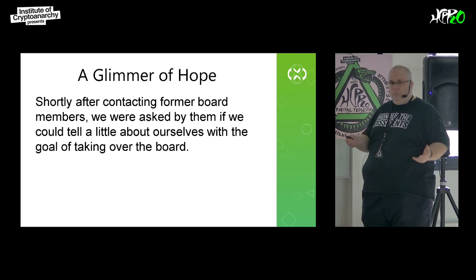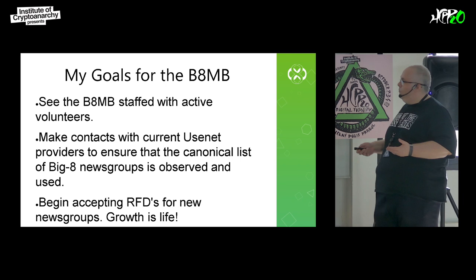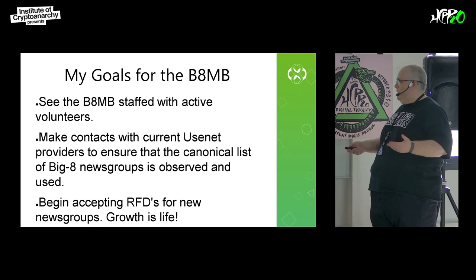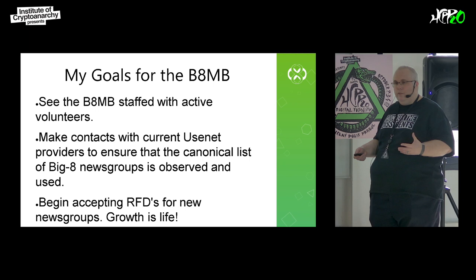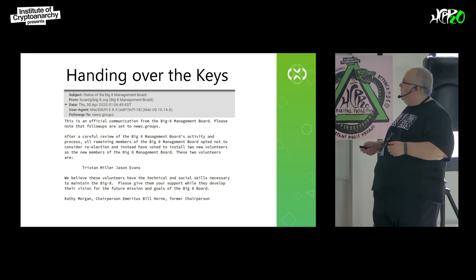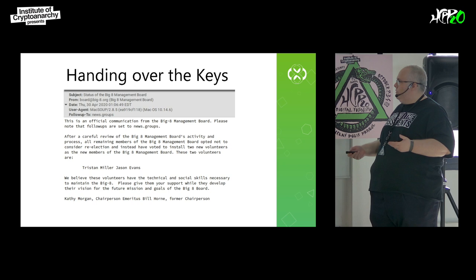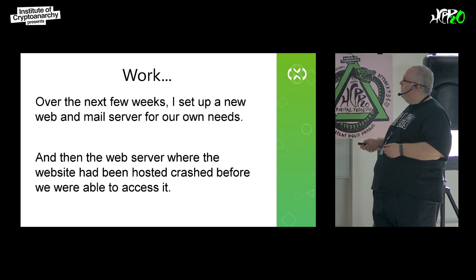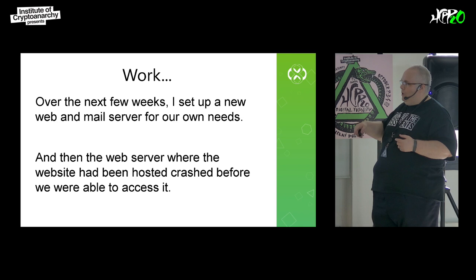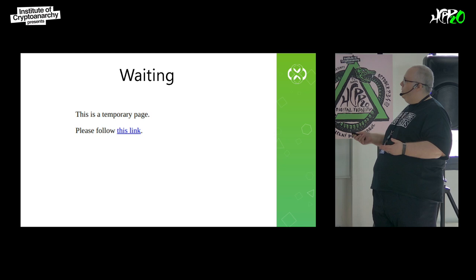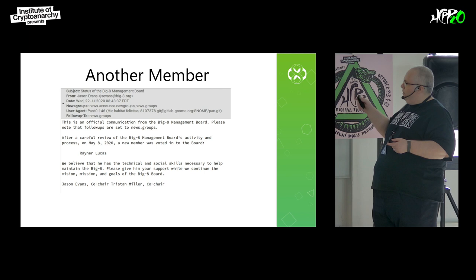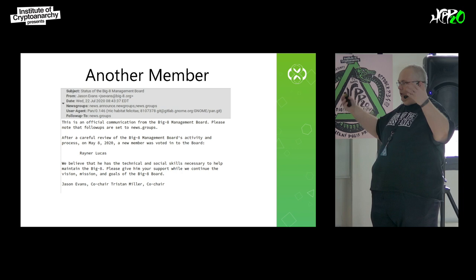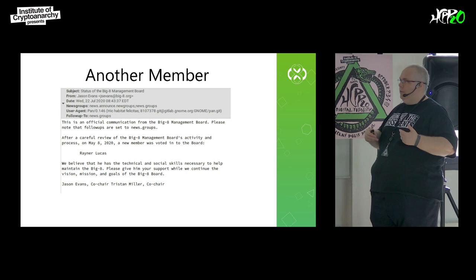Shortly after contacting the board, we were asked, hey, do you guys want to just take it over from us? Because we're not going to do anything with it. They asked us to write a little bit about ourselves and what our plans were for the board. I wrote that I want to see it staffed again, contacts made with Usenet providers to see that the Big Eight management board is actually accepted, and to begin receiving RFDs — requests for discussion to create new groups or remove groups. On April 30th, the previous members posted to a moderated group saying that Tristan and I are now the new members, the sole board members. In July, we added a third person as a balancing force so that in case Tristan and I had a disagreement, we would have a two-thirds majority rather than just being deadlocked.